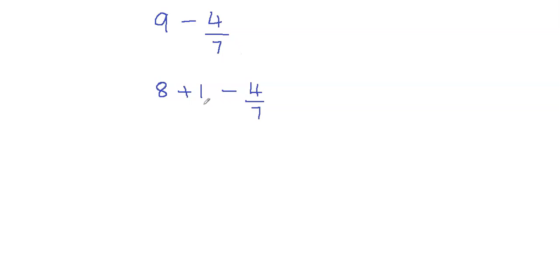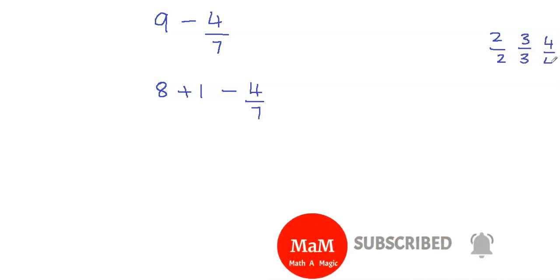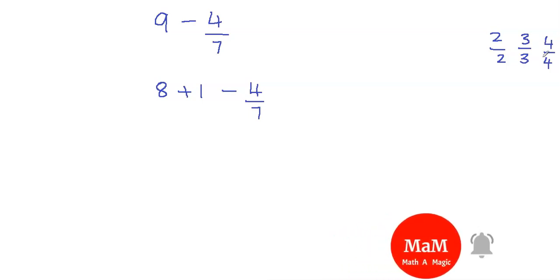Now the next step is we need to convert our one whole as a fraction. So I can write 1 as 2 over 2 or I can write 1 as 3 over 3. I can write 1 as 4 over 4, right? I can write 1 as 5 over 5 and so on.